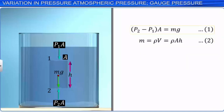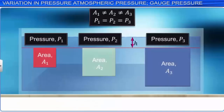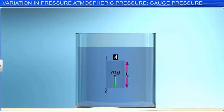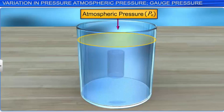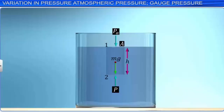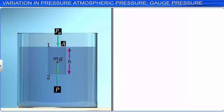The liquid also experiences pressure on its free surface from the atmosphere, called atmospheric pressure, denoted by P_A. If point 1 of the liquid element is on the top surface exposed to the atmosphere, then the pressure at the bottom becomes P = P_A + ρHg. The pressure difference P − P_A is called the gauge pressure at that point, which depends on the density of the liquid, the height of the liquid column, and the acceleration due to gravity.